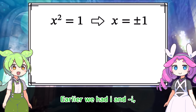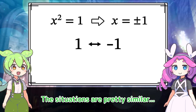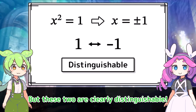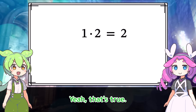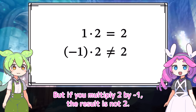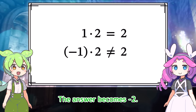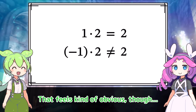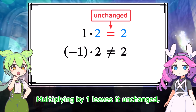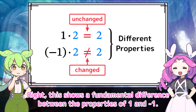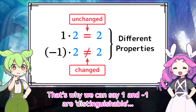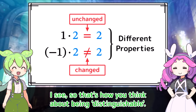Earlier we had I and negative I, but now we have 1 and negative 1. The situations are pretty similar, but these two are clearly distinguishable. As an example of how 1 and negative 1 are distinguishable: if you multiply 2 by 1, you get 2. But if you multiply 2 by negative 1, the result is not 2 — the answer becomes negative 2. Multiplying by 1 leaves it unchanged, but multiplying by negative 1 changes it. This shows a fundamental difference between the properties of 1 and negative 1. That's why we can say 1 and negative 1 are distinguishable.